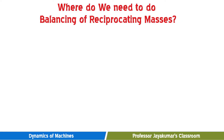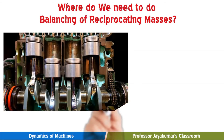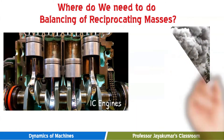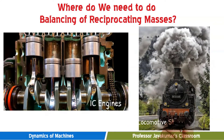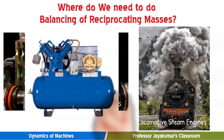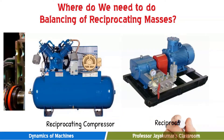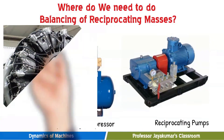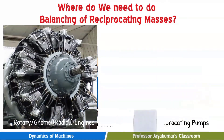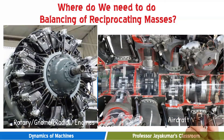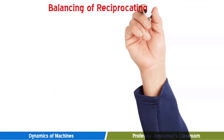Before getting on with the topic, let us understand some applications where we are required to do balancing of reciprocating masses — in IC engines of automobiles, in locomotive steam engines, in reciprocating compressors, in reciprocating pumps, in rotary and radial engines in aircraft, and in V-engines. Wherever we have masses which are reciprocating, we are required to do balancing of reciprocating masses.